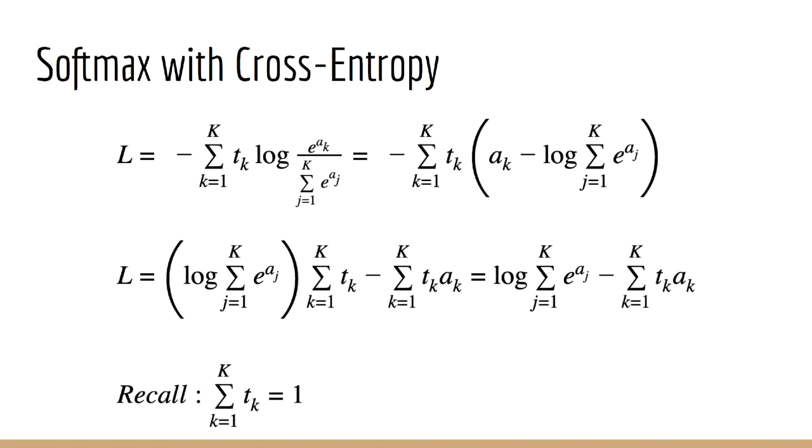If we simplify our expression by expanding the log, this is what we get. As you can see, we end up with two terms. One of the terms is just tk times ak, and it's easy to see why that's numerically stable - it's just a linear function of the ak's.